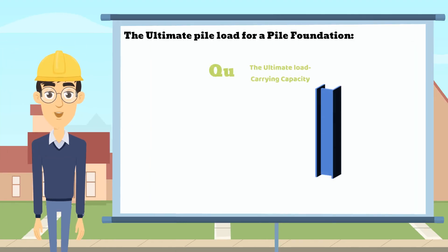The ultimate load carrying capacity, QU, is formed by the load carrying capacity at the pile point, that's the QP, and the frictional resistance derived from the interface between soil and pile, that's the QS. We will explain in detail.